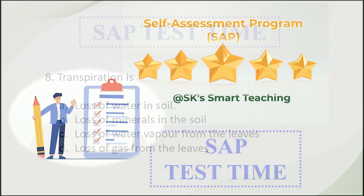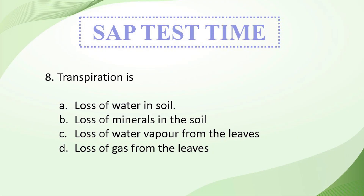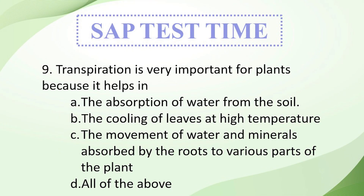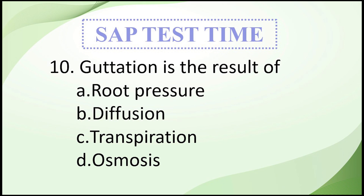It's time for the SAP test again. Your eighth question: transpiration is — Option A: loss of water in soil; Option B: loss of minerals in soil; Option C: loss of water vapor from the soil; Option D: loss of gas from the leaves. Your ninth question: transpiration is very important for plants because it helps in — Option A: absorption of water from the soil; Option B: the cooling of leaves at high temperature; Option C: the movement of water and minerals absorbed by the roots to various parts of the plant; Option D: all of the above. Your final question: guttation is the result of — Option A: root pressure; Option B: diffusion; Option C: transpiration; Option D: osmosis.